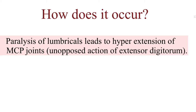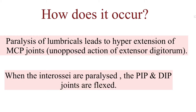Thus, paralysis of the lumbricals will cause hyperextension of the MCP joints due to unopposed action of the extensor digitorum, and paralysis of the interossei causes flexion of the PIP and DIP, leading to claw hand deformity.